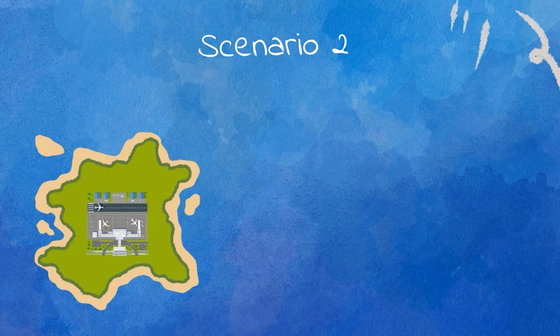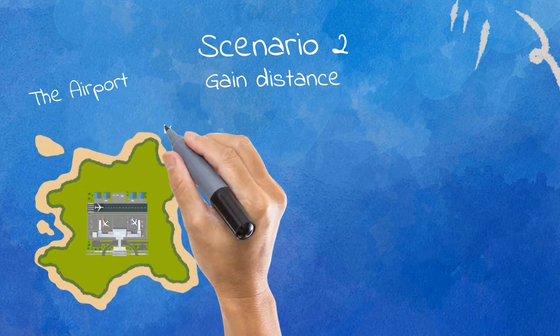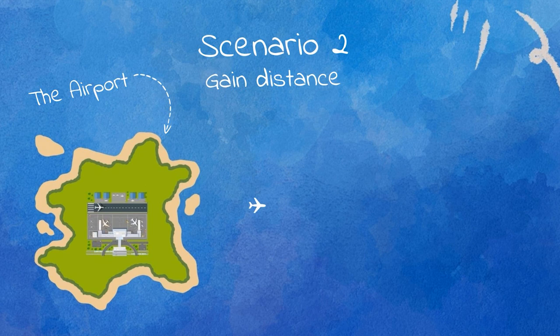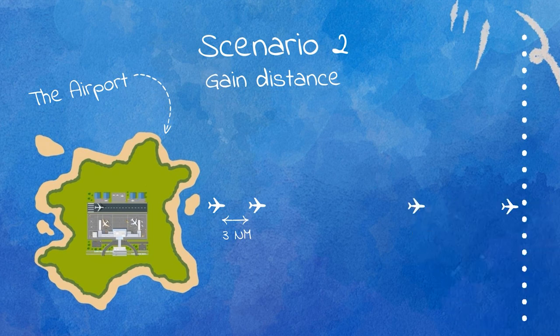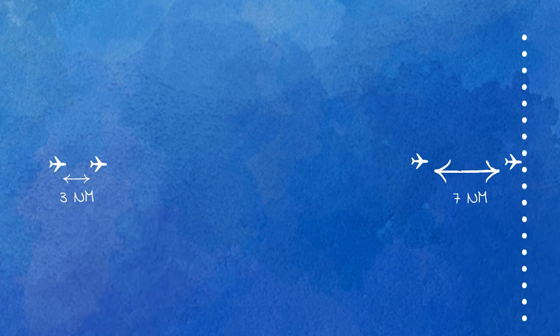Another common situation is that we need the speed difference to gain a gap between aircraft. Two aircraft take off from an airport heading in the same direction. The tower controller gives takeoff clearances so that there is at least a minimum radar separation of three nautical miles when the second aircraft is airborne. At the airspace boundary, when the approach controller hands off traffic to the enroute controller, a spacing of five to ten nautical miles is commonly required. So something needs to be done to increase the gap from three miles to, for example, seven miles.